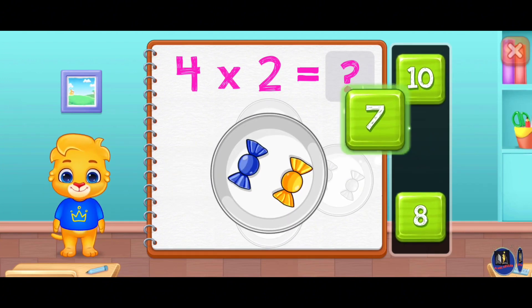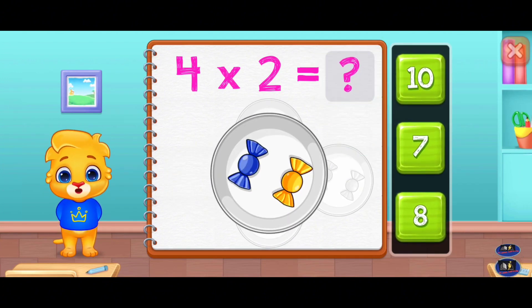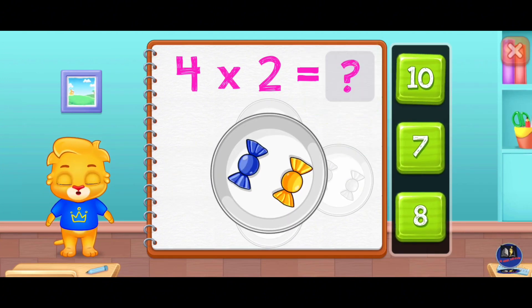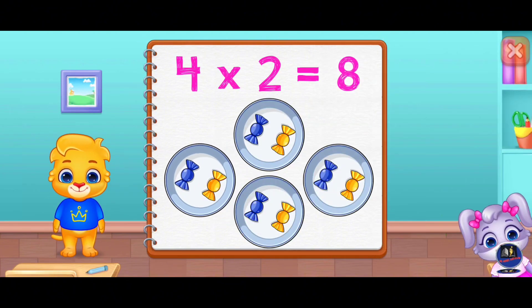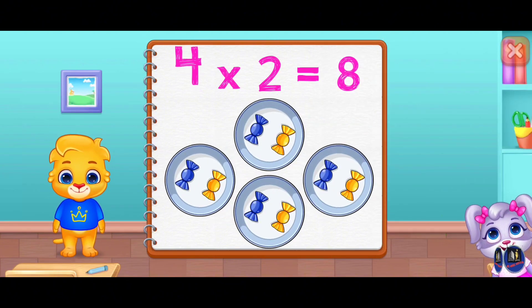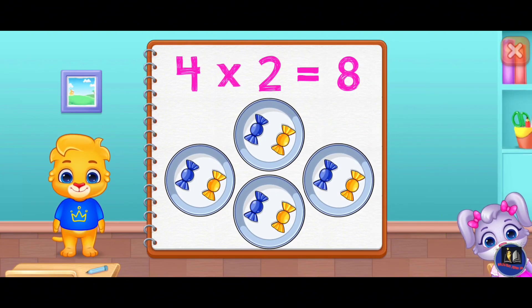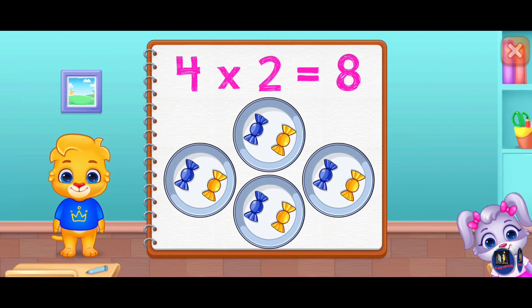Seven, ten, eight. Four times two equals eight.